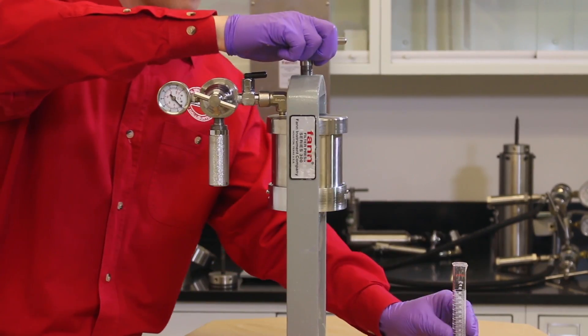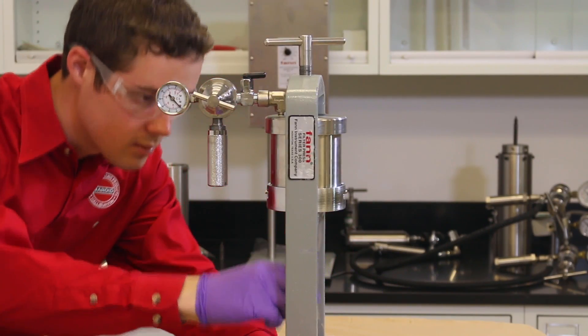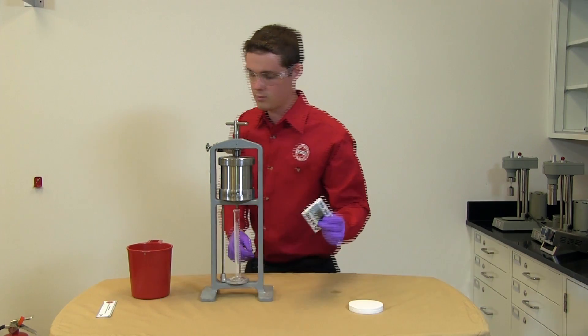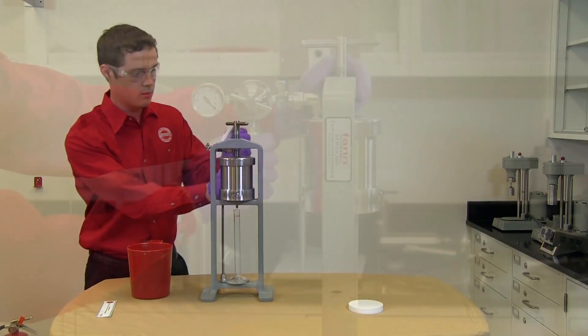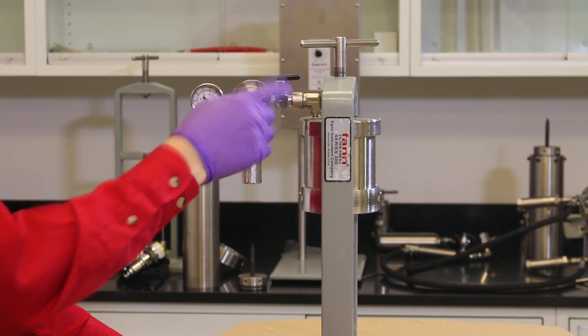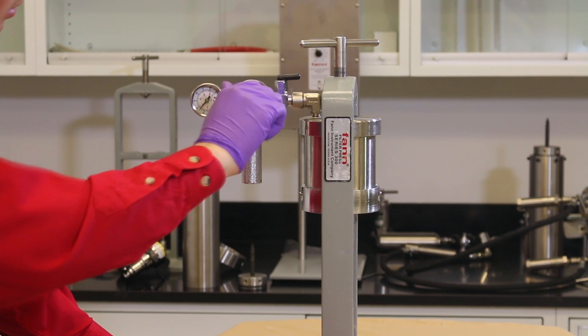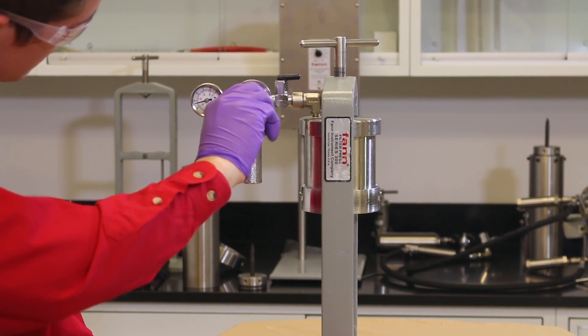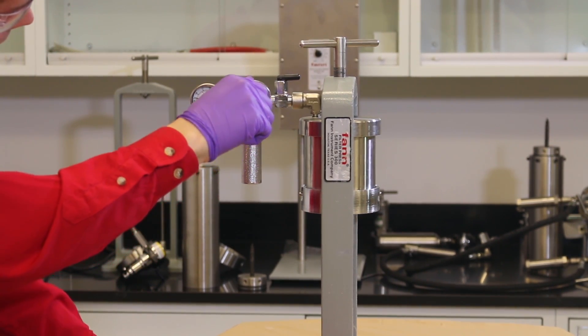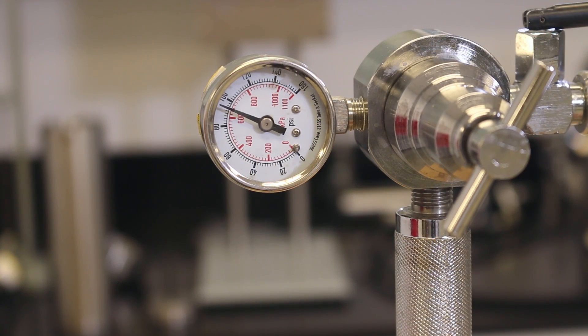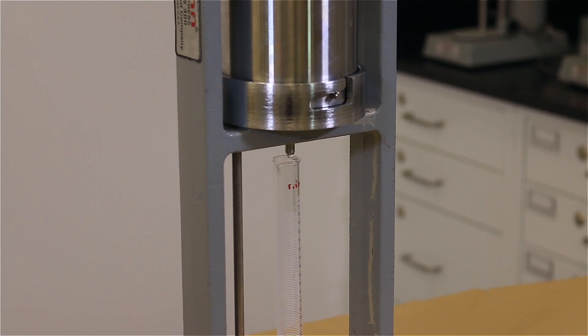Put a graduated cylinder underneath to collect the filtrate. Turn the regulator in to get 100 PSI on the cylinder as shown on the gauge. Set the timer for 30 minutes. Filtration rate is measured in milliliters of filtrate per 30 minutes of time.